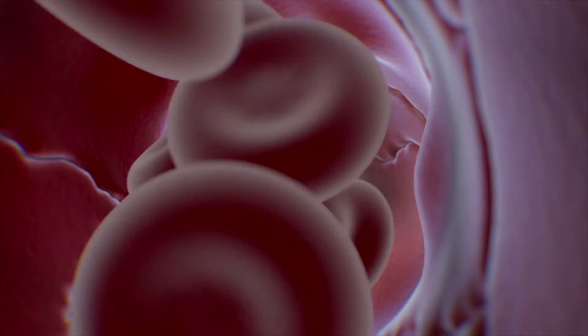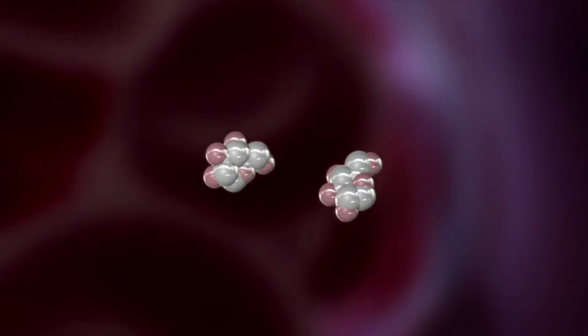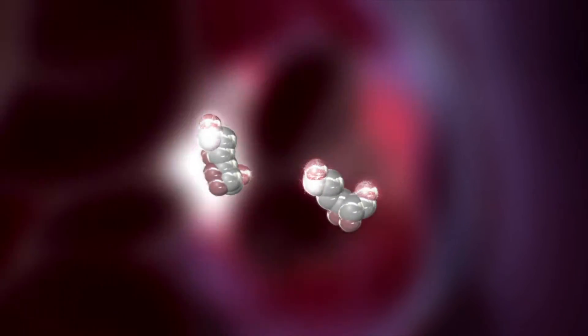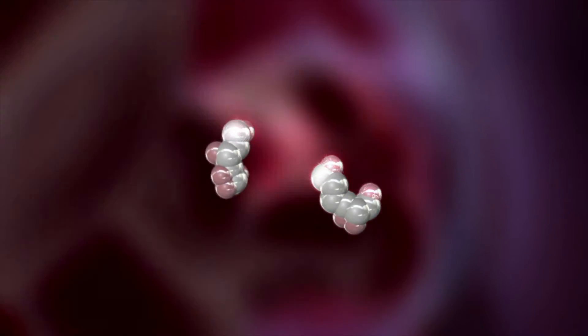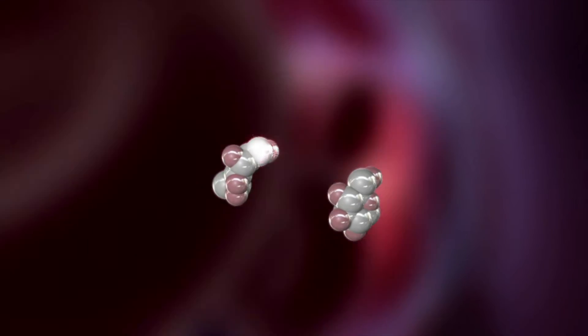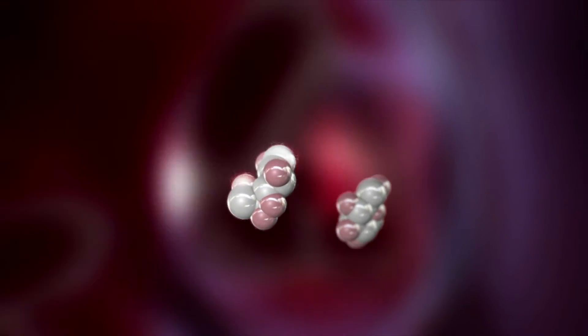Blood carries molecules such as blood sugar as fuel to nourish our cells. Sometimes the ring-shaped structures of blood sugar molecules break open, revealing two very sticky ends. Usually they close again with no harm done, but once in a while they stay open long enough to stick to something.